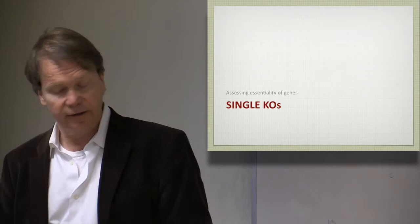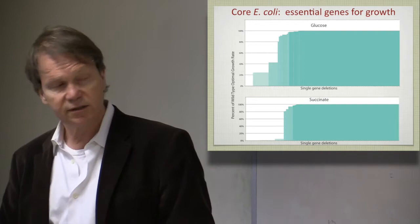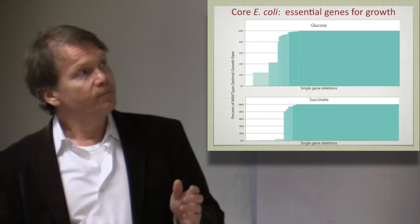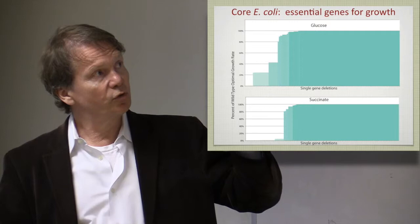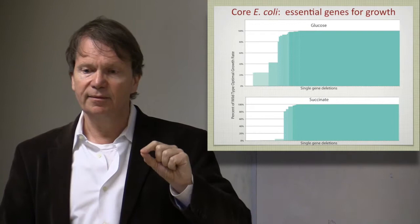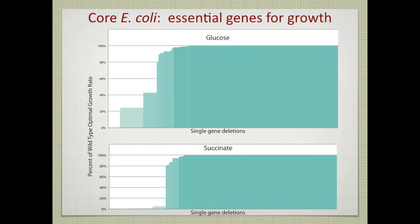So let's look at single calculations of single knockouts. So here's the way this is done. This is done for the core E. coli model, our toy model, where you can be growing it on different substrates. Top we show for glucose, bottom for succinate, there's two examples. Then you just go down your gene list in the model and remove them one at a time, and you do the optimization procedure. Then you can just rack order the outcome of that calculation by the growth rate. And what you get are three types of outcomes.